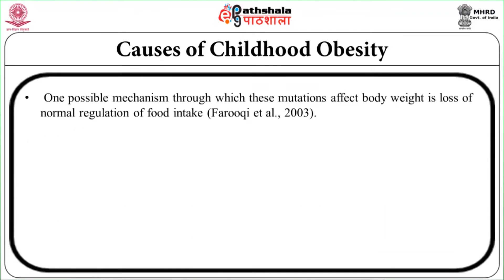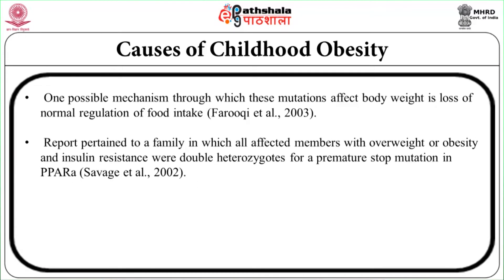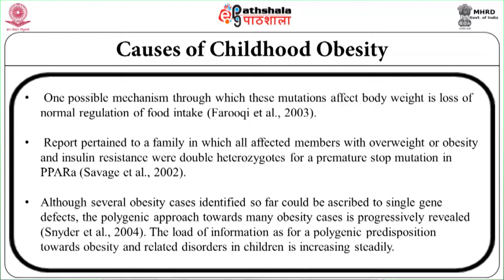One possible mechanism through which these mutations affect body weight is loss of normal regulation of food intake (Faruqi et al., 2003). As for other genes, MC4R and a mutation in the POMC gene in unrelated children with severe obesity has been described (Charles et al.). One report pertained to a family in which all affected members were overweight or obese and insulin resistant, being double heterozygotes for a premature stop mutation in PPARA (Savage et al., 2002). Although several obesity cases identified so far could be ascribed to single gene defects, the polygenic approach towards many obesity cases is progressively being revealed (Snyder et al., 2004).